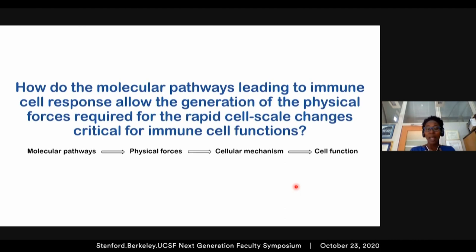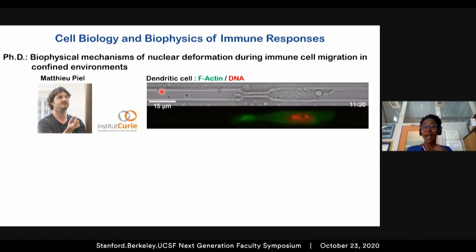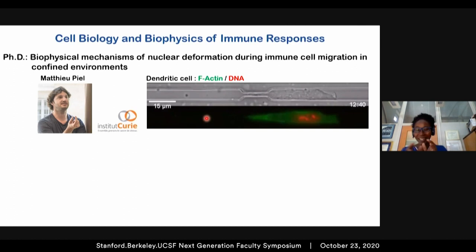I got into the field of immune response because of my passion for the nucleus. I am intrigued by how this micron-scale organelle can pack the meter-long DNA. This passion led me to the lab of Mathieu Piel at the Curie Institute for my PhD, where I studied the biophysical mechanism of nuclear deformation during immune cell migration under confinement. There, I designed a microfabrication-based setup consisting of microchannels with constrictions.